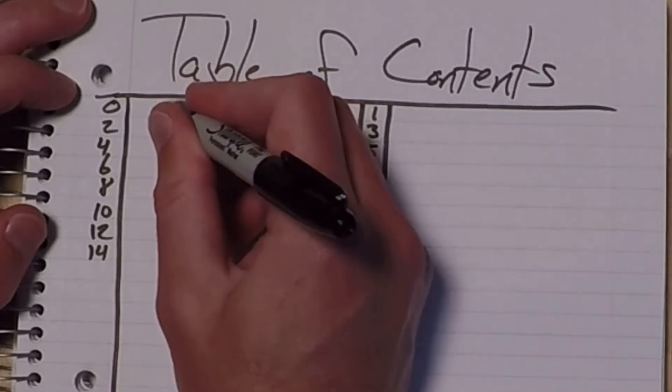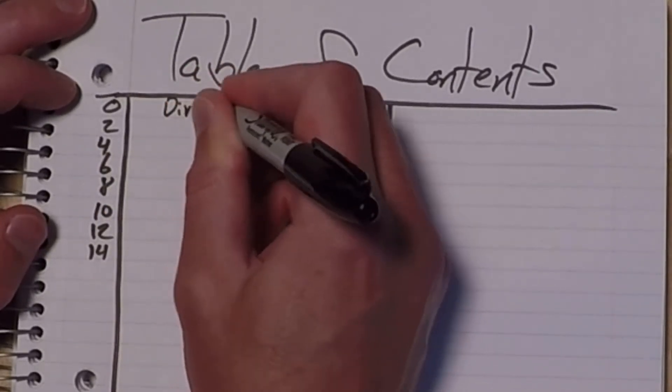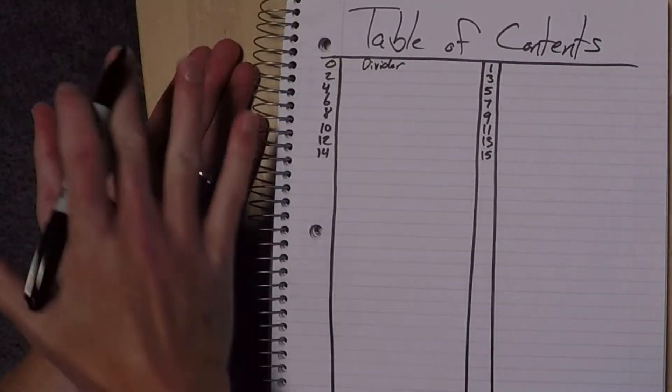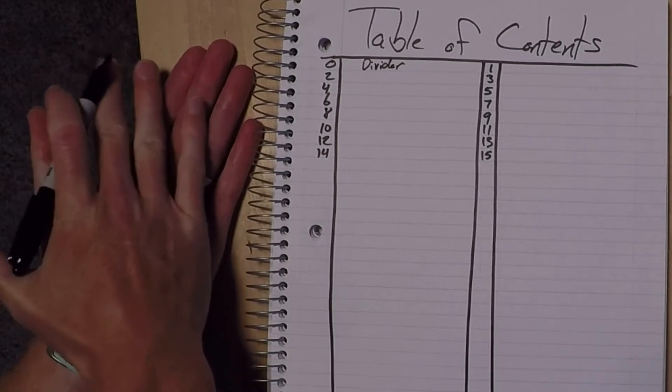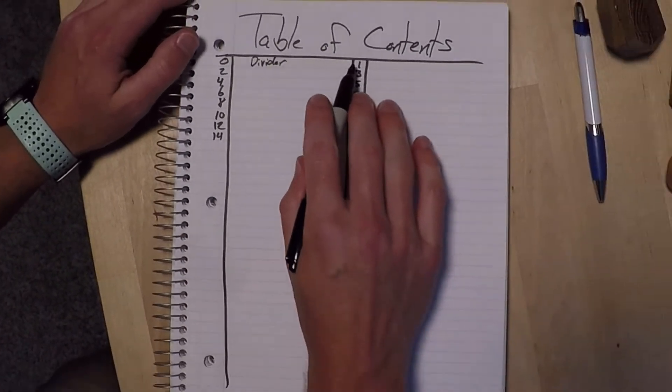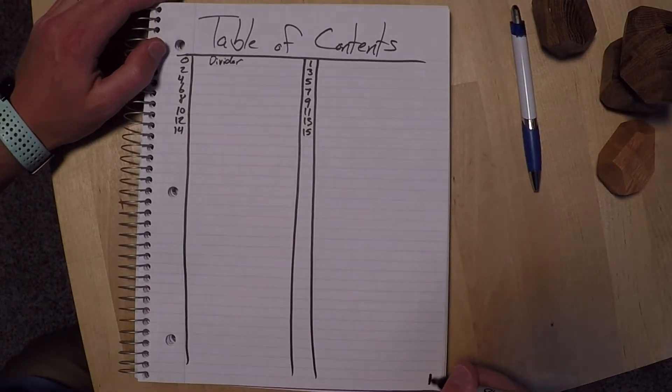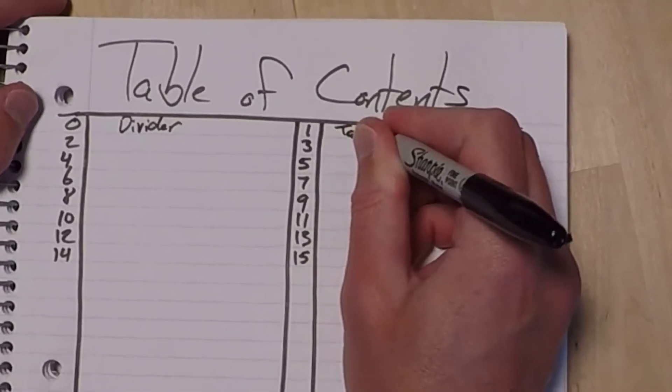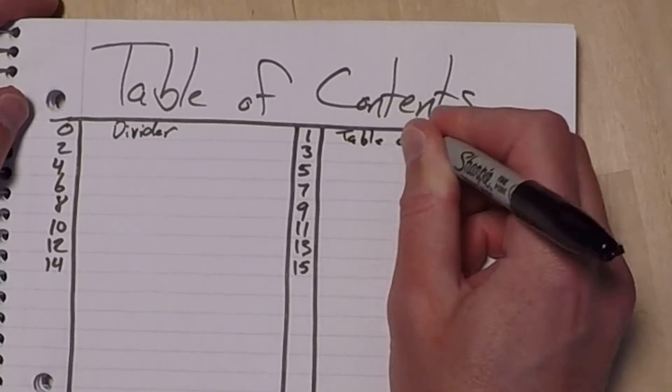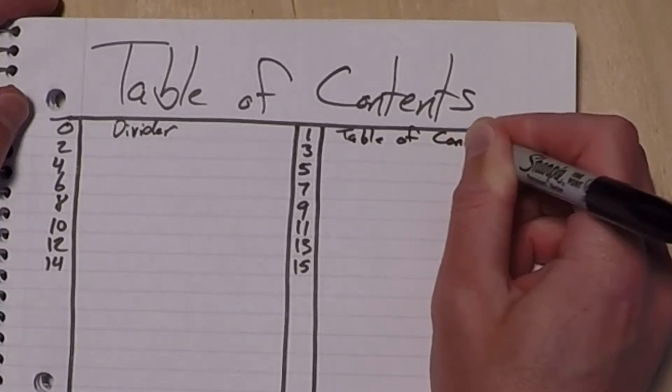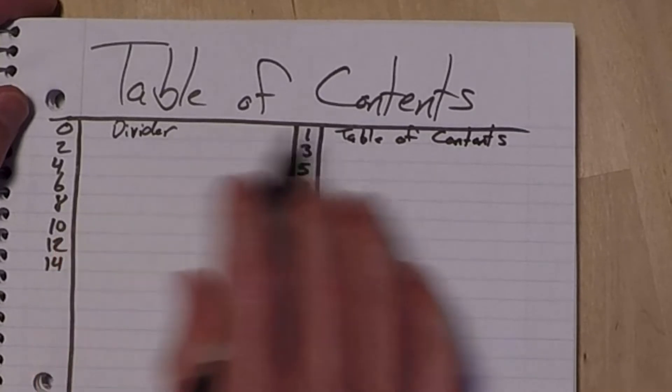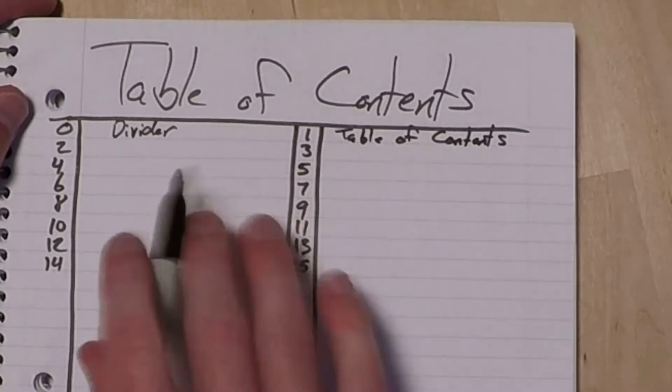Zero is actually going to be our divider between this and the next class. So that's actually going to be this page right here, whatever is here. And page one is our table of contents. So I'm going to write table of contents.